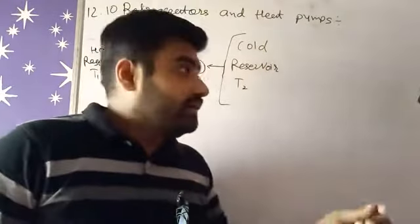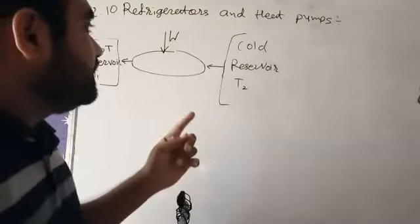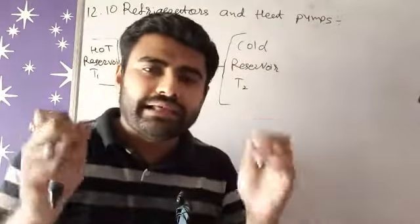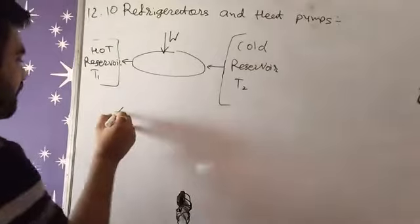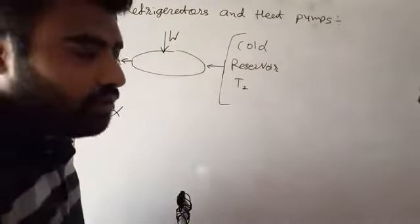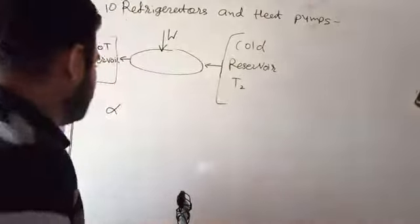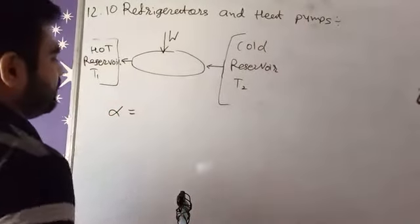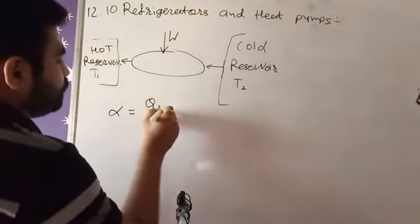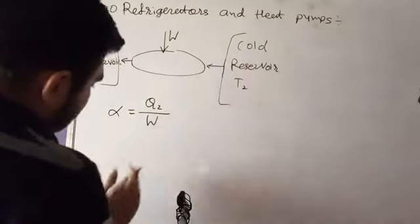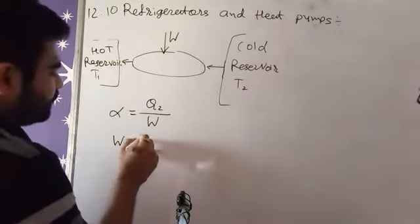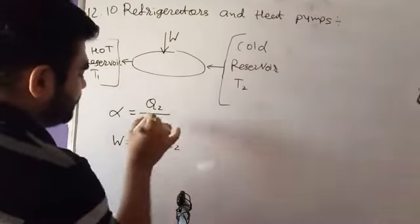So basically, we study efficiency in the heat engine topic but here, we have to study performance coefficient or we can say coefficient of performance. So, the formula is α = Q2/W. W is the same formula, W = Q1 - Q2.